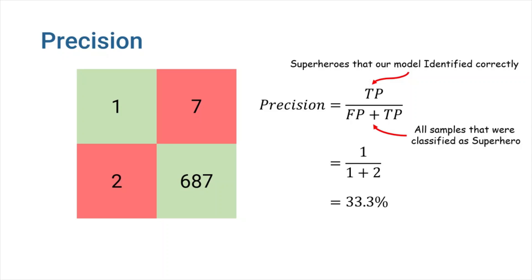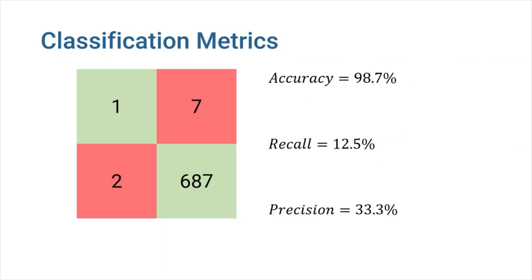As you can see, our model is performing poorly on this metric as well. Now, let's compare the accuracy, recall, and precision of our model and see what each number means.